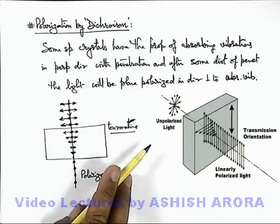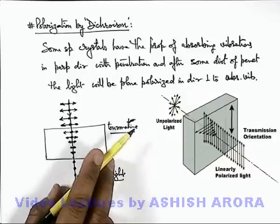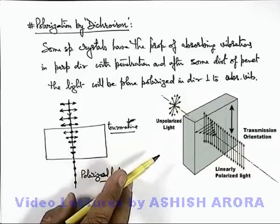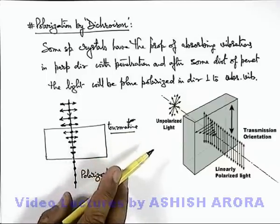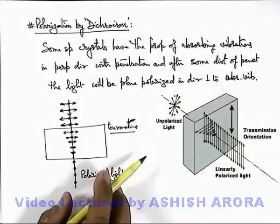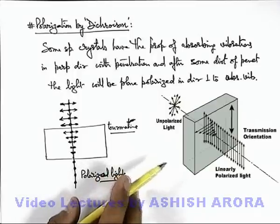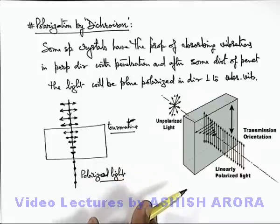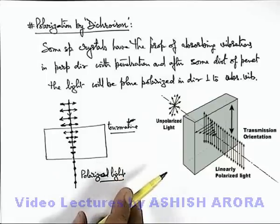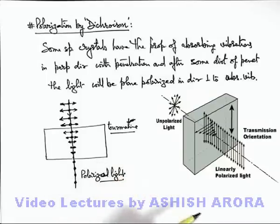Here you can see from the rear side of this dichroic slab, unpolarized light is allowed to incident. If we consider all oscillations in two perpendicular directions, then the direction of vibration which is in the plane of incidence is absorbed with distance, and the vibrations which are perpendicular to plane of incidence are coming out. So finally the ray is becoming completely polarized.